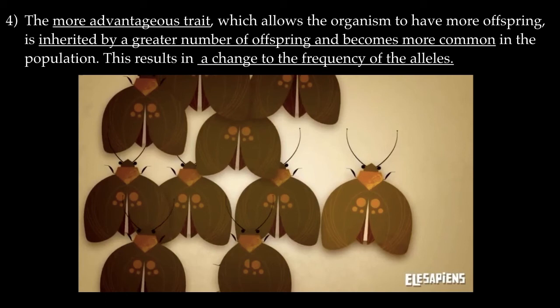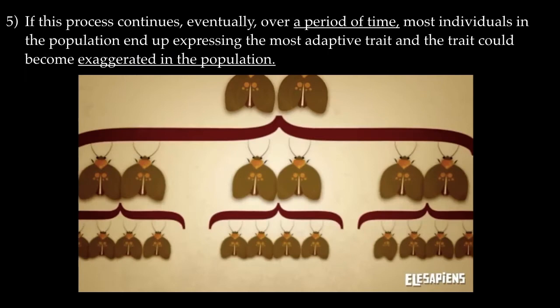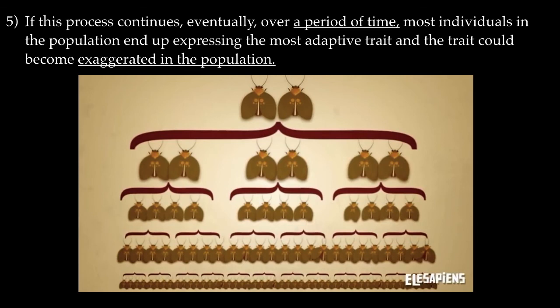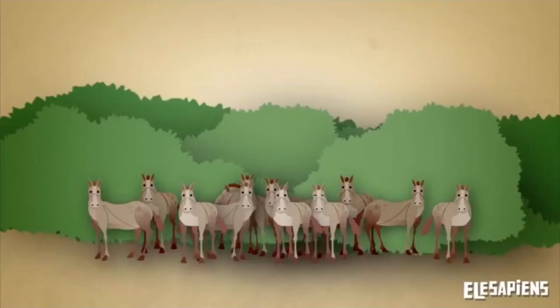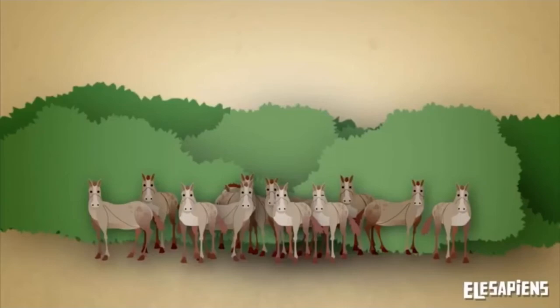After many generations, a trait that was once rare appears more frequently, becoming the norm within a species. If this process continues, eventually most individuals in the population end up expressing the most adaptive trait, and the trait could even become exaggerated. Natural selection can help us understand how, over an even greater time span in an ever-changing environment, a population can continuously change, adapting to the selective pressures of its environment and leading to the formation of new species. If two populations of one species are changing in response to different environmental pressures, over time they can become separate species — which is how natural selection can explain the origin of species.